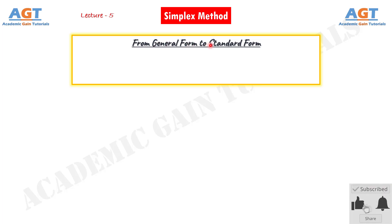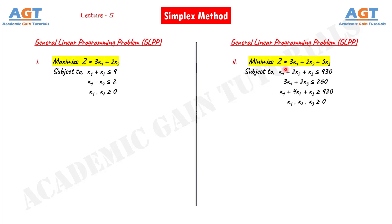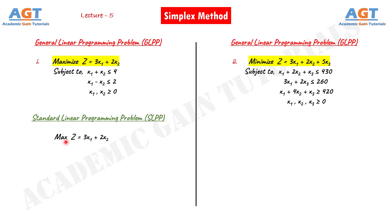To convert from general form to standard form, the first step is to check whether the objective function of the given linear programming problem is maximized or minimized. If the objective function is to be minimized, then we have to convert it into a problem of maximization. Here we have taken two questions, both problems are in general form. Let's convert them from general form to standard form together. In the first problem, the objective function is in maximized form, so we don't have to change anything, and we can write maximize z equals to 3x1 plus 2x2 in the standard form.